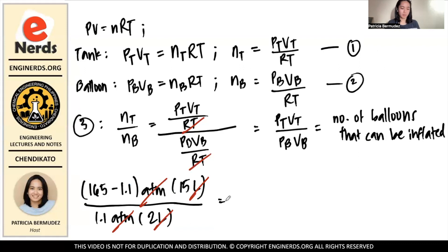Calculating, we have 165 minus 1.1 times 15. Then, you divide it by 1.1 times 2. We have 1,117.5 balloons. And you can round it off. Because maximum, right? You still account for the half balloon that you created. So, you'll have 1,118 balloons maximum that you can inflate with that amount of helium inside the tank.